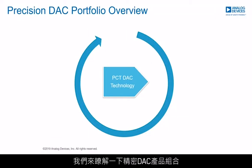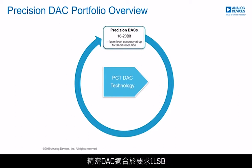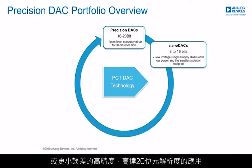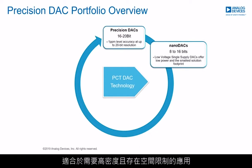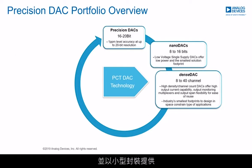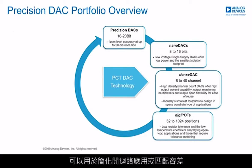Let's take an overview of the precision DAC portfolio and the different technologies we offer. The portfolio can be thought of as representing eight different technologies. Precision DACs target applications requiring high accuracies of 1 LSB or less and resolutions of up to 20-bit. Nano DACs, our most popular low-voltage single-supply portfolio, offer low power and the smallest solution footprint for applications requiring high density and space constraints. Dense DACs are our high-density products with up to 40 output channels, available in small packages.